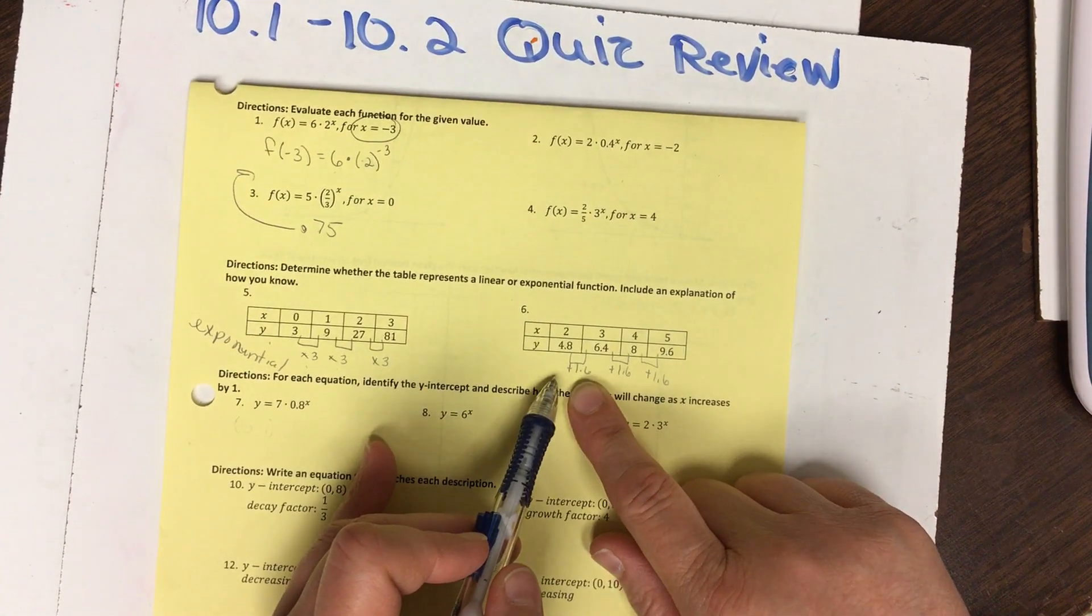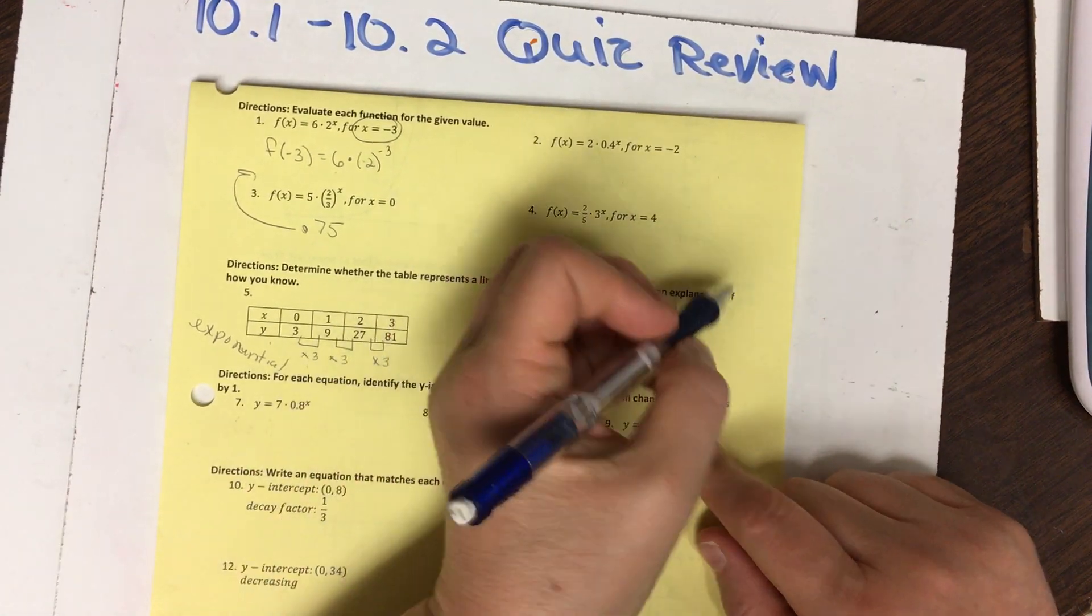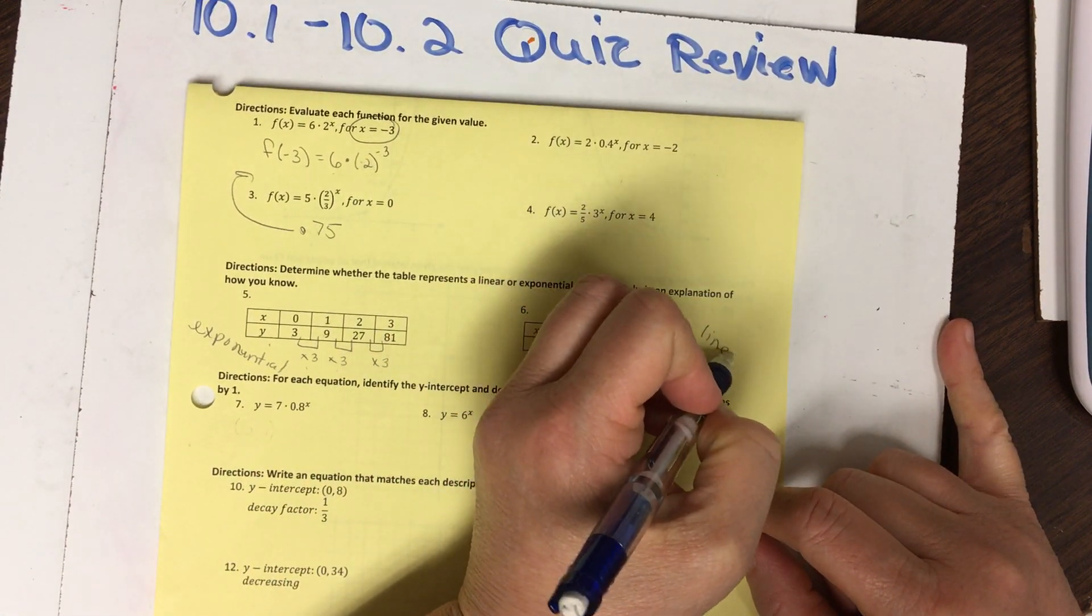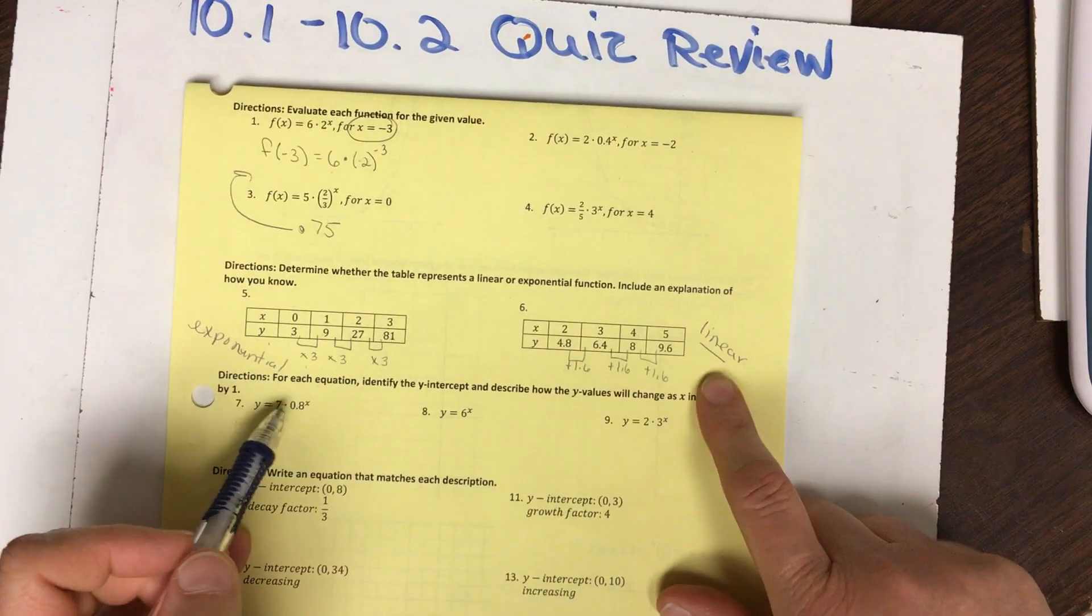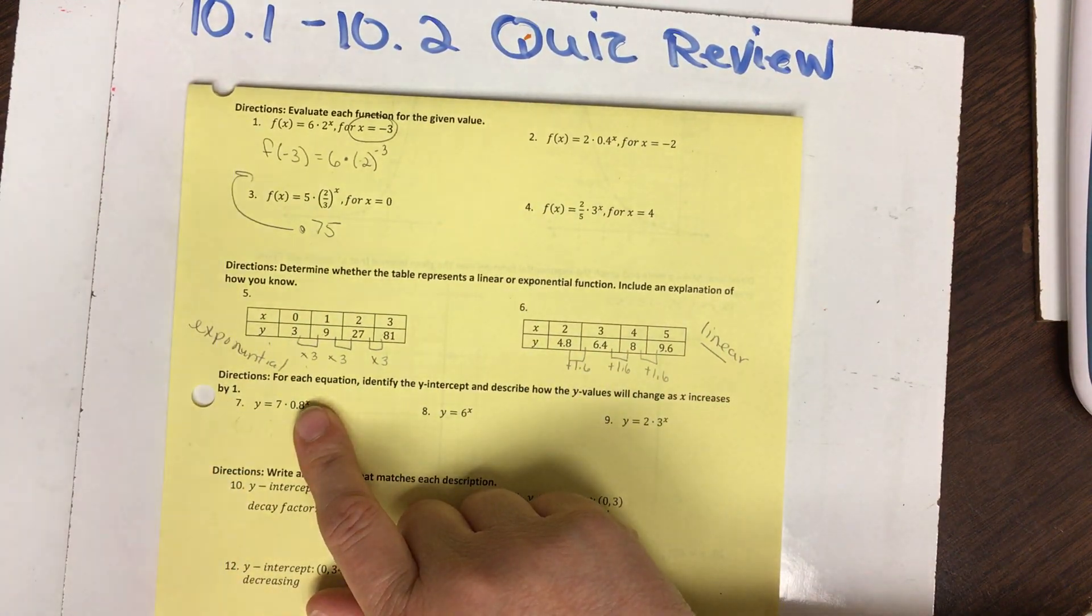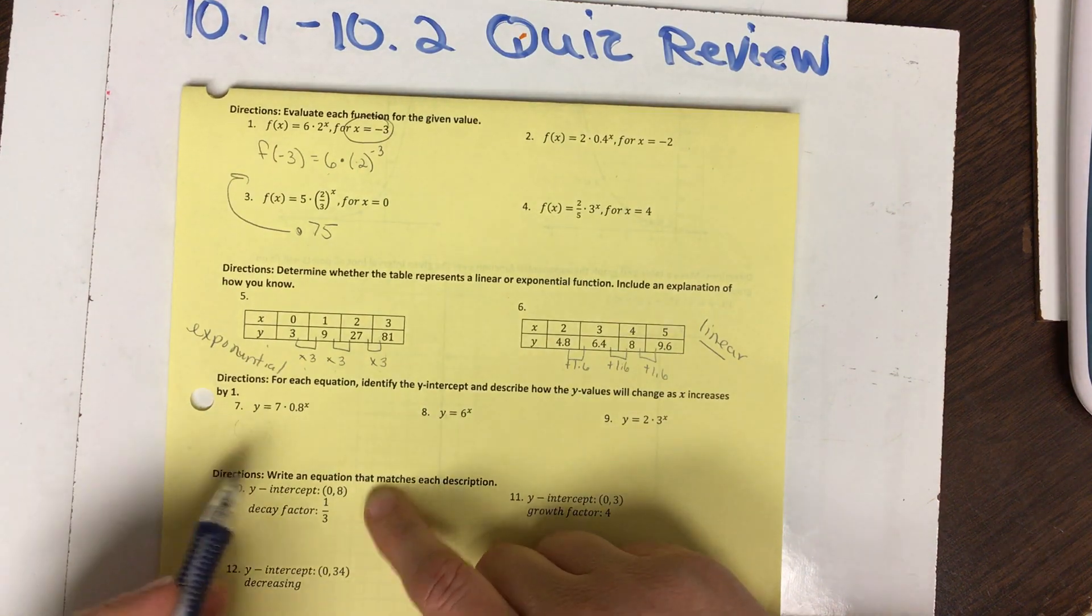Over here, we're going up but we're adding the same number each time, so I know that that is definitely linear. Linear has to do with adding or subtracting, and exponential has to do with multiplying. Alright, next section.